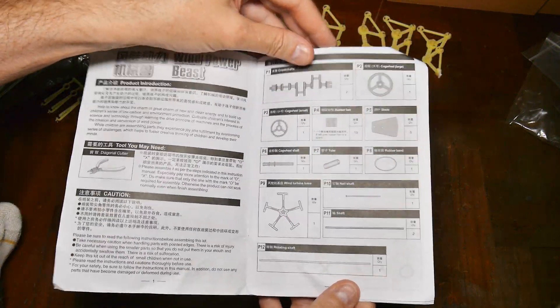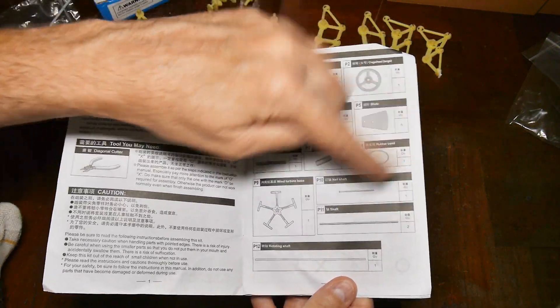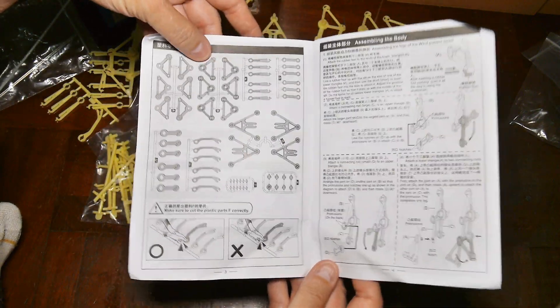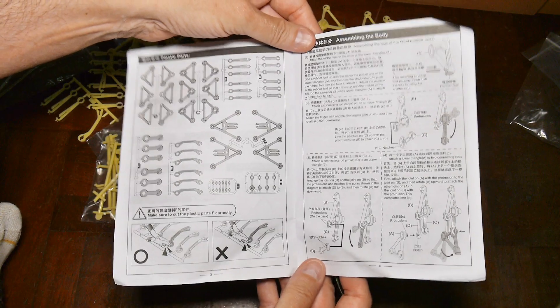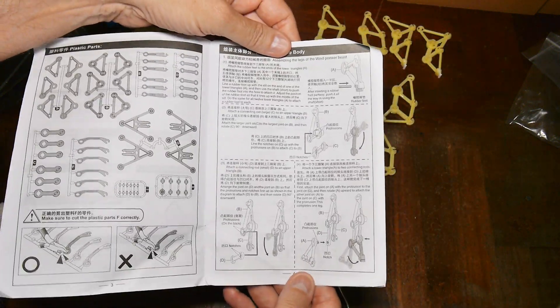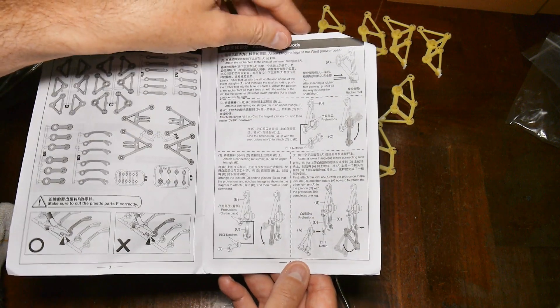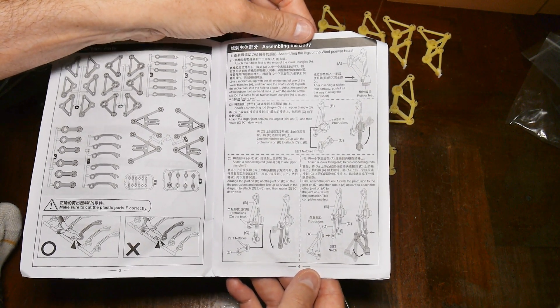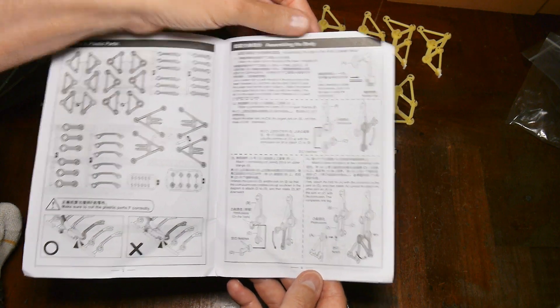The instructions that came with this particular model are kind of marginal. There's a million billion parts and the instructions that begin over here. They are not really clear. Sometimes they're vague. Sometimes they're downright misleading.